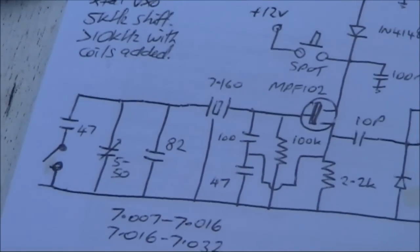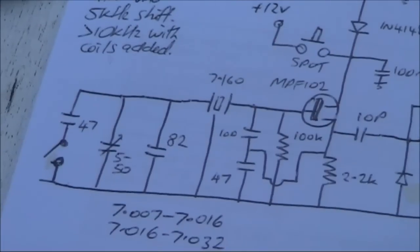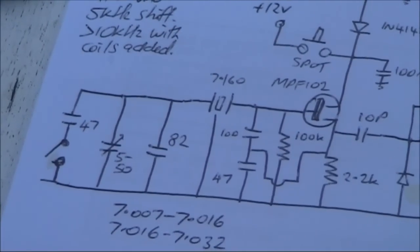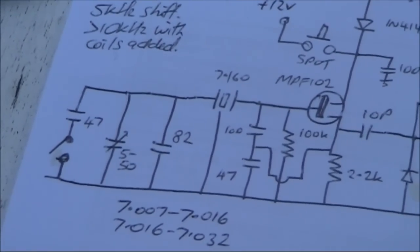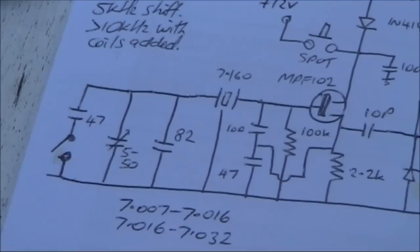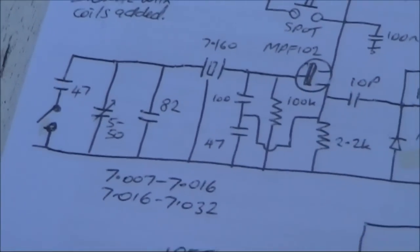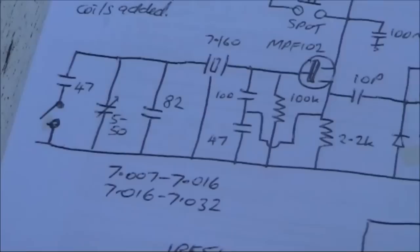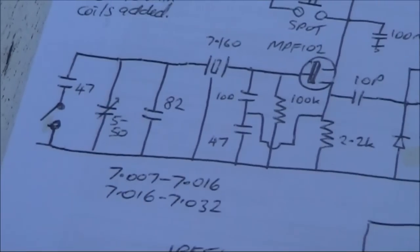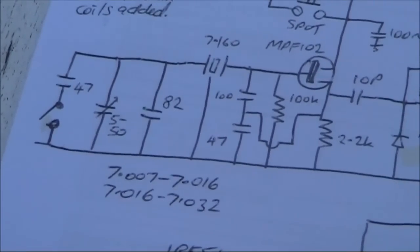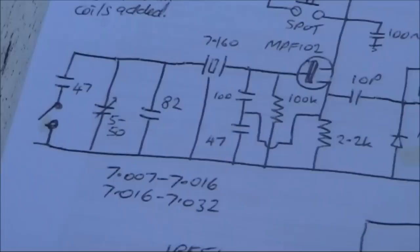Because I'm only using a 50 pF variable capacitor, I actually wanted a bit more capacitance, so I've put in a switch with a 47 pF. That gives you up to nearly 100, and hence the two frequency ranges you see here. 7007 to 7016 and 7016 to 7032.